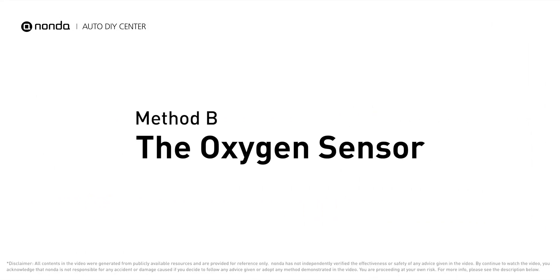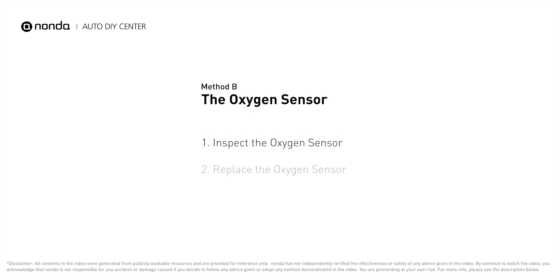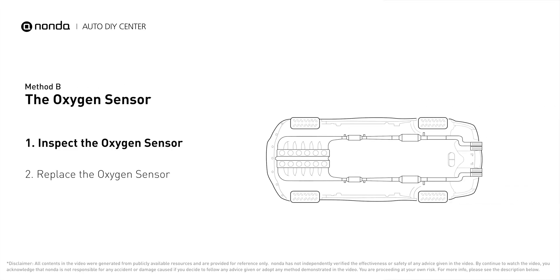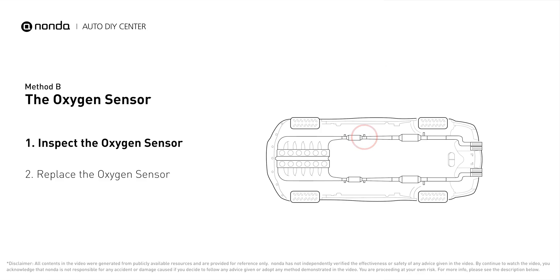Method B: the oxygen sensor. This oxygen sensor is located right after the catalytic converter. Bank one is on the side with cylinder number one. Sensor number two is usually the downstream oxygen sensor, behind the converter.